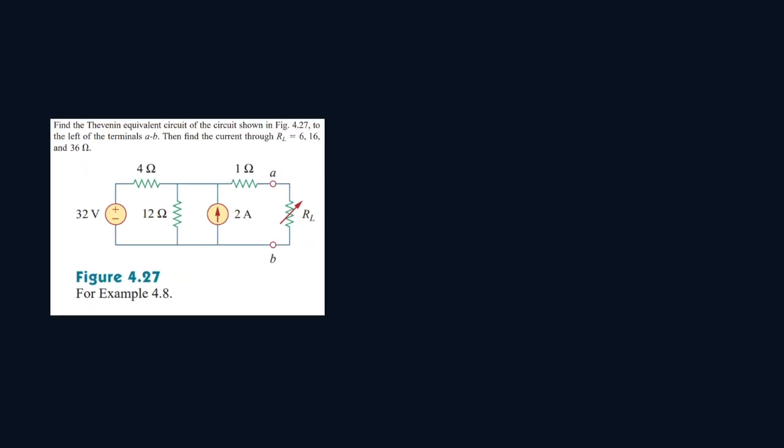So we'll start by finding the Thévenin resistance. To find that, you have to turn off all independent sources. So we will rewrite the circuit as the following. So if we turn off a voltage source, it's just a closed wire. And then if we turn off our current source, it's an open wire. So it will be like that.